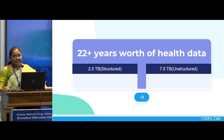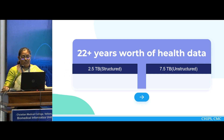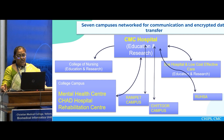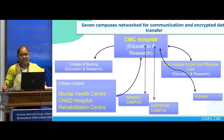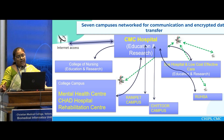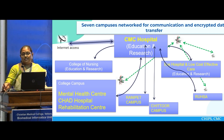We have about 22 years' worth of health data, because we started from 2000. We have about 2.5 TB of structured data and 7.5 TB of unstructured data. We have seven campuses and they're all interconnected — CMC main campus, Ranipet campus, MHC, CHAD, Chitur campus, Karigiri, and High Hospital. All these campuses look at the same subset of data. Whenever any investigation is ordered at Ranipet campus, it's equally accessible at CMC and on the web. A subset of data is also available for internet access, such as web-based or mobile payments and appointment bookings. We have also recently started a doctor's app, which is a mobile version of the clinical workstation.